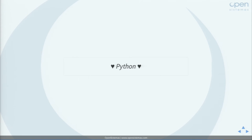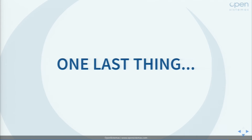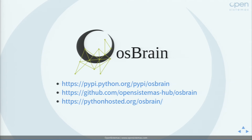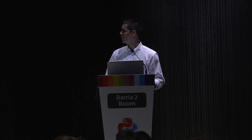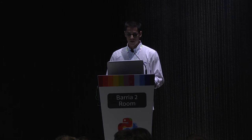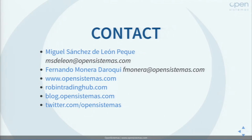As a final conclusion, Python has proved to be a great tool for implementing a real-time automated trading platform. And one last thing: I'm happy to announce that OSBrain has just been released — you are the first to know outside the company. You can find this multi-agent system on PyPI and GitHub if you want to check the source code, along with documentation, which is a work in progress. If you want to contact us, you can send an email to me or Fernando Monera, and you can find links to our website, blog, and Twitter.